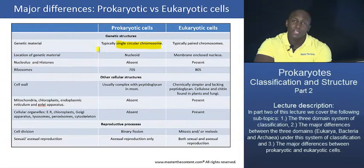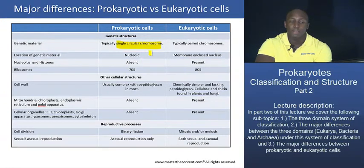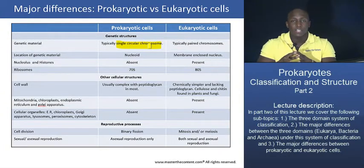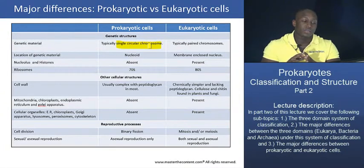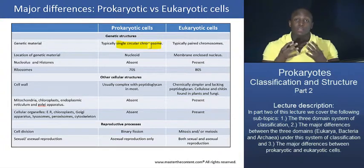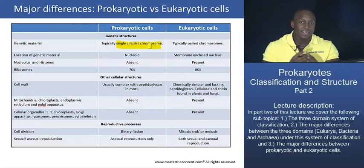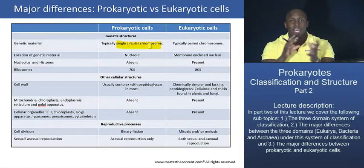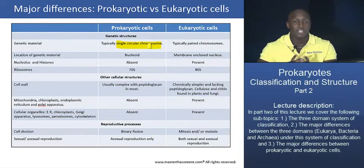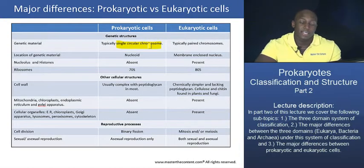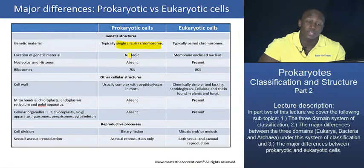What about the location of the genetic material? In the case of prokaryotic cells, they do not have a nuclear membrane or nuclear envelope. Their genetic material is located in a region referred to as the nucleoid — an ill-defined, irregular region inside the prokaryotic cytoplasm where the genetic material is located. It's not protected by a membrane; it's just contained in the region we call the nucleoid.